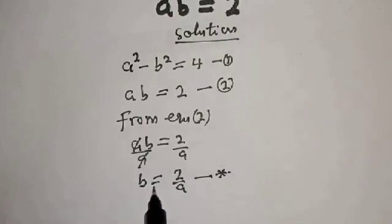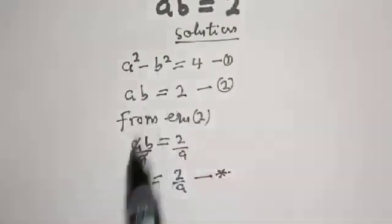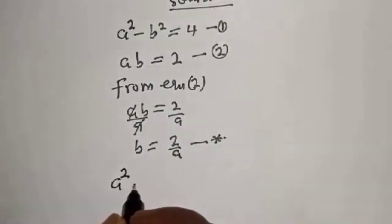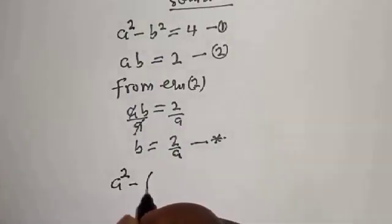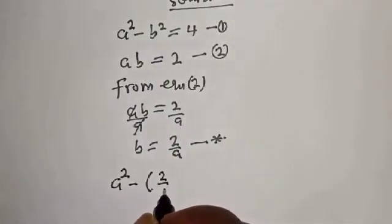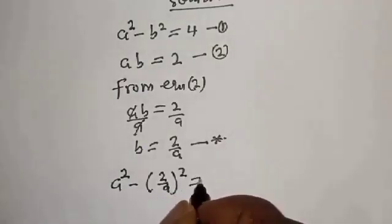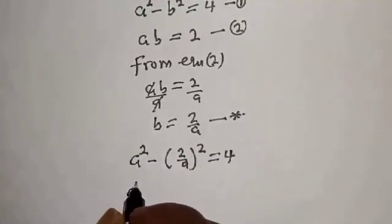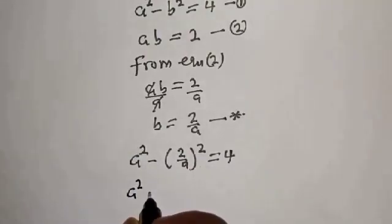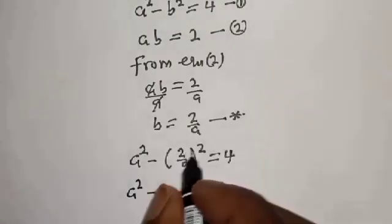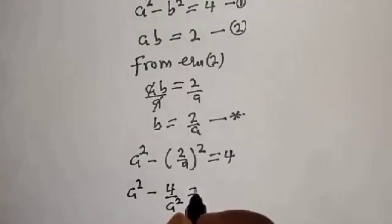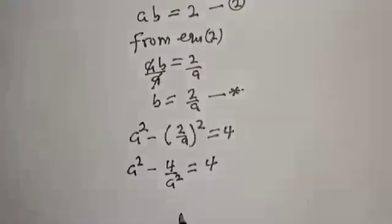Now let's substitute for b in equation 1. That is, a squared minus (2 over a) squared is equal to 4, which gives a squared minus 4 over a squared is equal to 4.